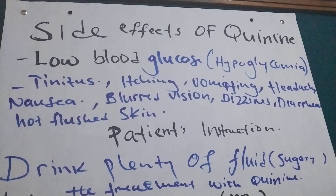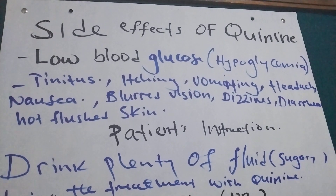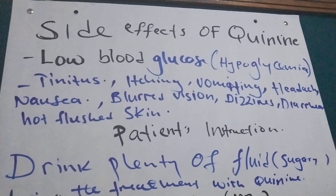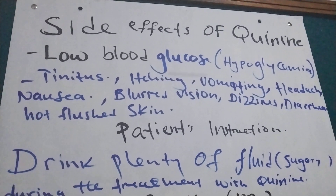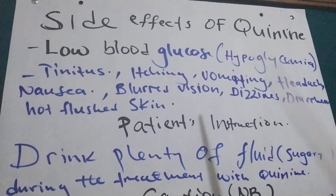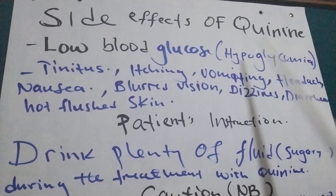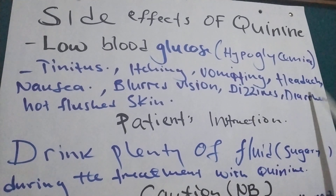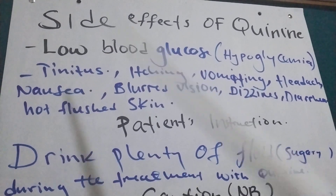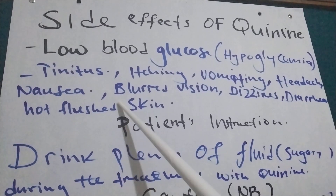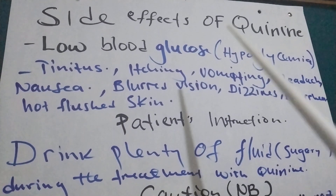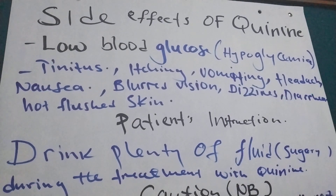What are the side effects of quinine? The first side effect is low blood sugar or glucose — that is hypoglycemia. Tinnitus, ringing in the ear. Then itching — you will feel itching. Vomiting.